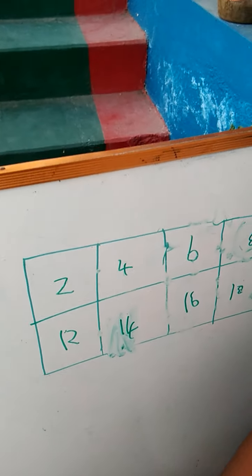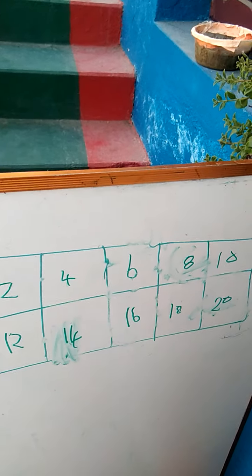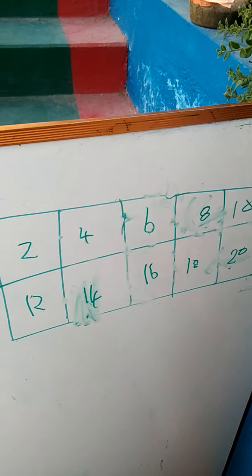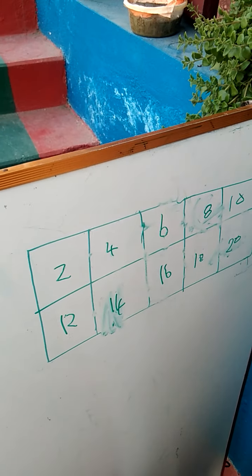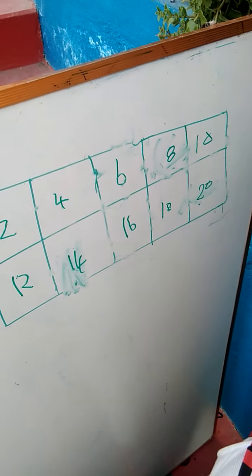Okay, take two and write alternate numbers. Only even numbers, this is for two tables. Two, four, six, eight, ten, twelve, fourteen, sixteen, eighteen and twenty.